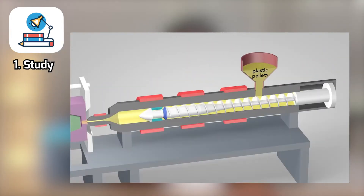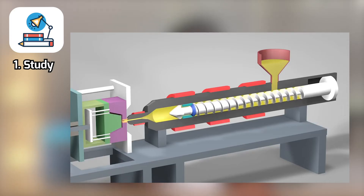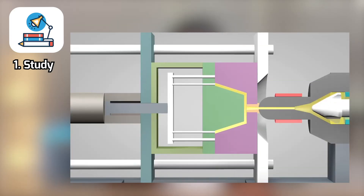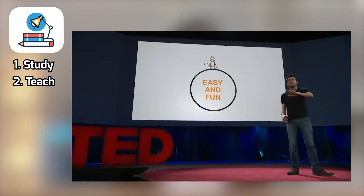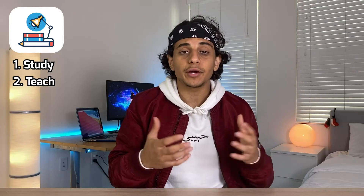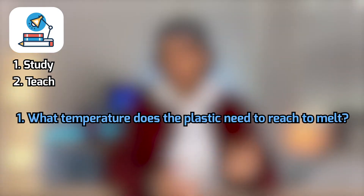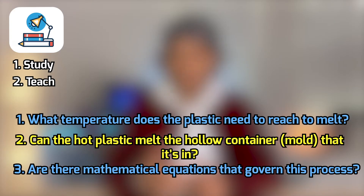For reference, injection molding is a manufacturing process that produces plastic parts by melting plastic, injecting it into a mold or hollow container, then cooling it to create your part. Once you've learned the concept, step two is to teach it to someone. If you can't find someone, sit in your room and pretend you're giving a TED talk to an imaginary audience. The person you're teaching will ask questions and help you figure out gaps in your understanding — like what temperature the plastic needs to reach to melt, or whether the hot plastic can melt the mold.